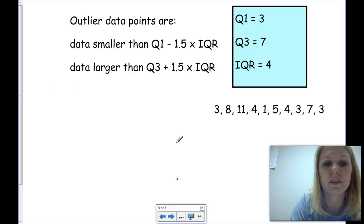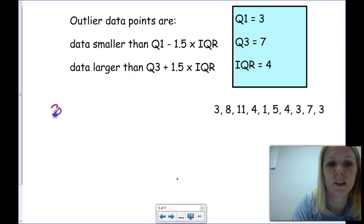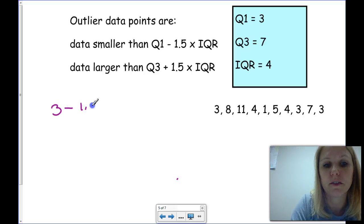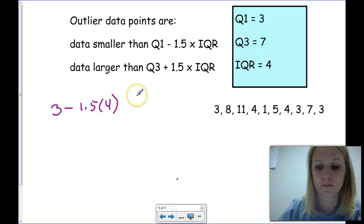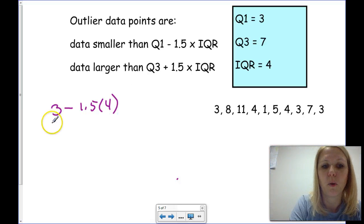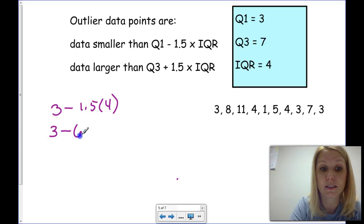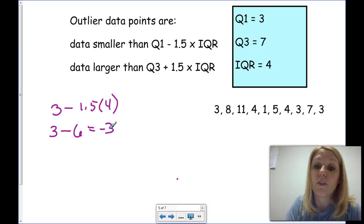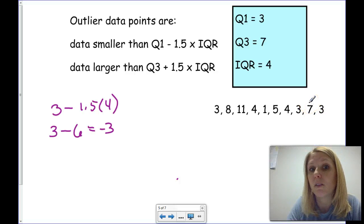So, quartile 1 is 3, and we're going to subtract from it 1.5 times 4. 1.5 times 4 happens to be 6. So, we're going to take 3 minus 6, which ends up being a negative number, negative 3. If you look at our points over here, you'll notice that we don't have any negative numbers. So, we don't have any outliers that are lower than our data set.